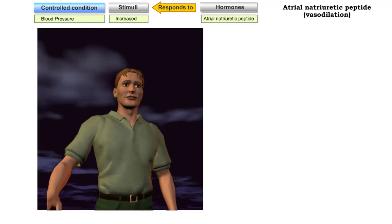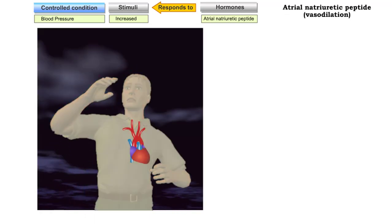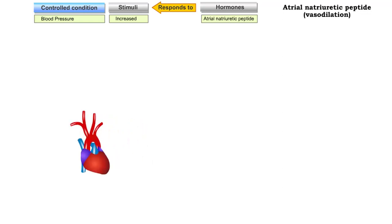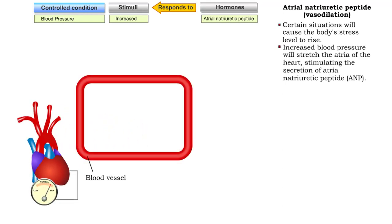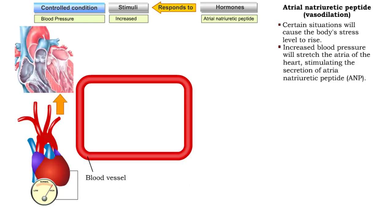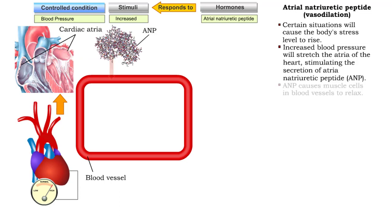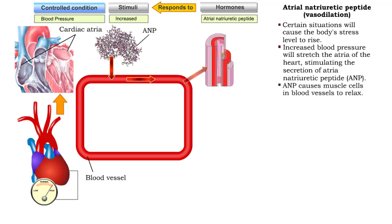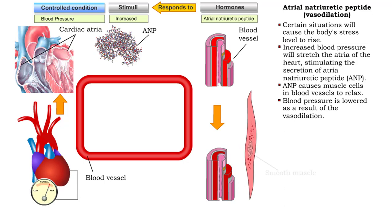Many situations can elevate blood volume and pressure. In response to rising blood pressure, atrial cells in the heart will stretch, stimulating the secretion of atrial natriuretic peptide. ANP targets muscle cells in blood vessels and causes them to relax, resulting in vasodilation and the lowering of blood pressure.